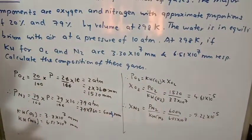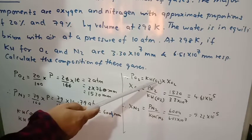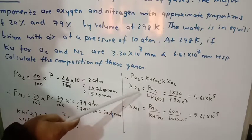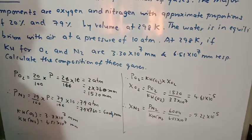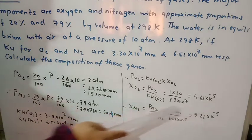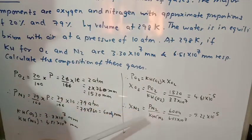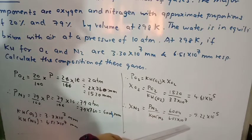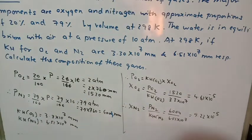Using P(O2) = KH(O2) × χ(O2), we get χ(O2) = P(O2) / KH(O2), giving the mole fraction of O2 dissolved in water. Similarly, χ(N2) = P(N2) / KH(N2). This gives us the composition of both gases dissolved in water. This question is in fact very simple once you apply Henry's law separately for each gas.